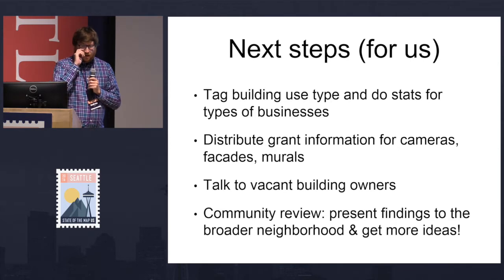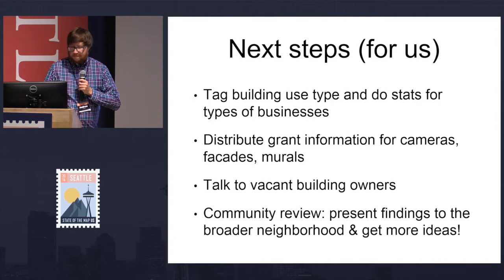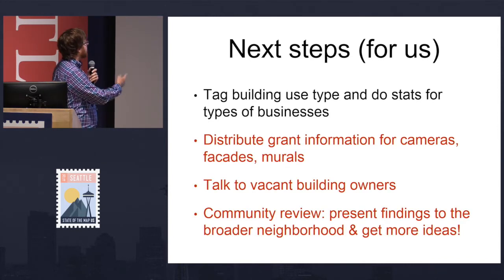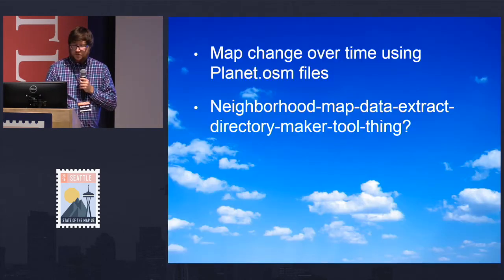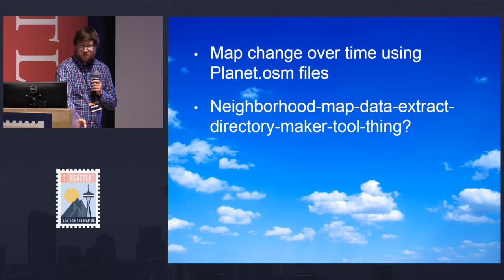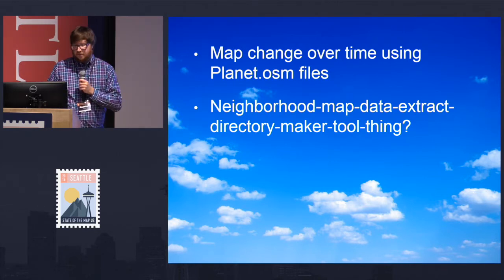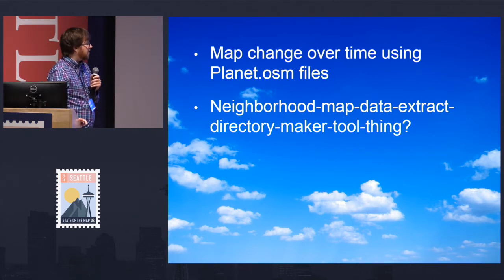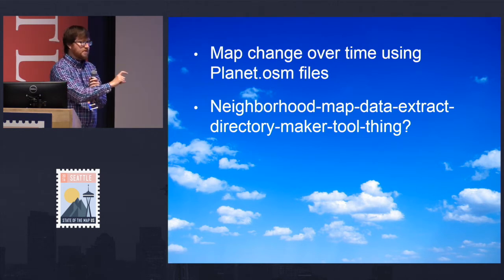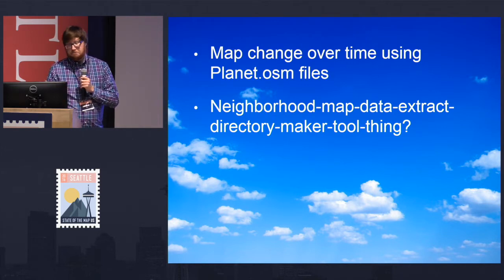We have a bunch of next steps, mostly things that are actually not OSM-specific — they're other downstream steps, which I think is interesting. Some blue sky ideas: what if you map change over time using something like a Planet OSM file — what used to be in this neighborhood, what's there now, what left, what came in, why did it change? People also asked about having a neighborhood organization website with a business directory that links directly to live OSM data so it's always up to date. I don't know exactly how to do that, but it's an interesting idea.